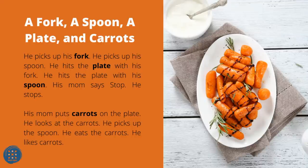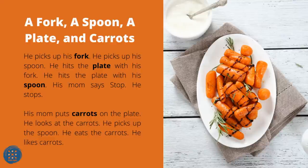A Fork, a Spoon, a Plate, and Carrots. He picks up his fork. He picks up his spoon. He hits the plate with his fork and with his spoon. His mom says stop. He stops. His mom puts carrots on the plate. He looks at the carrots, picks up his spoon, and eats the carrots. He likes carrots.